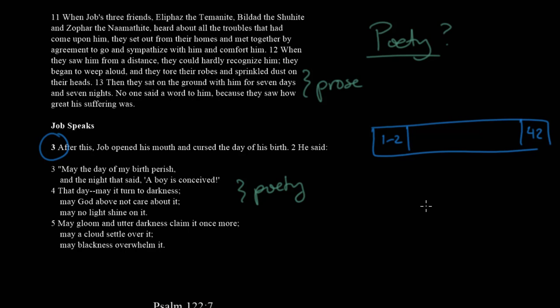So what makes it poetic? What have scholars looked at over the centuries? Well, one of the things they often look at is whether it rhymes — that's a natural thing to examine. As it turns out, in the original Hebrew there is little rhyme. There's occasional rhyme, but it's not a major feature.